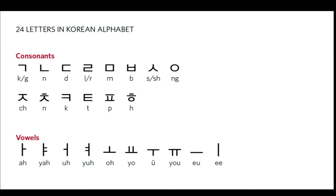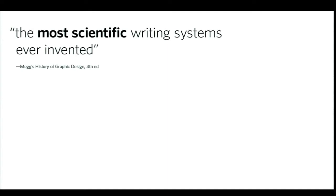He created a phonetic writing system comprised of 28, but now 24, basic sounds represented by letters that could be combined to form all the words within the Korean language. Because it's an alphabetic system, the Korean system is much easier to learn than the Chinese system. King Sejong created an alphabet that is one of the most scientific writing systems ever invented. It's more widely understood that Sejong appointed a group of scholars to develop the alphabet, but more recent research indicates that Sejong himself was the likely inventor.